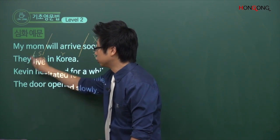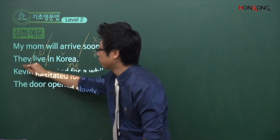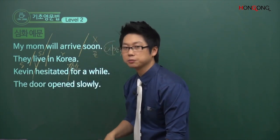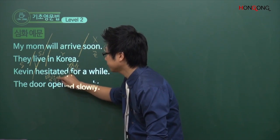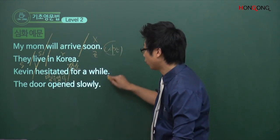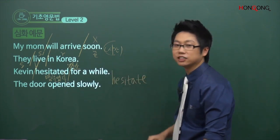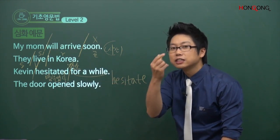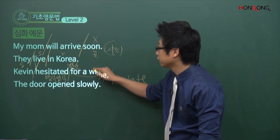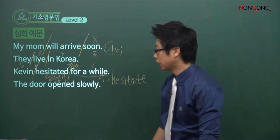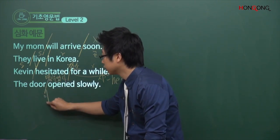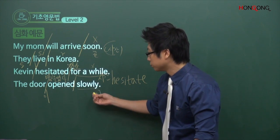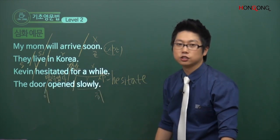Kevin hesitated for a while. '망설였다'는 뜻이고, for a while은 짧은 시간을 의미합니다, '잠시 동안'. 시간이니까 역시 카운트하지 않죠. Kevin은 망설였다, 일형식. 그 다음 The door opened slowly. 문이 열렸다, 천천히. '천천히'는 부사잖아요. 부사는 넣었다 뺐다 하는 거죠? 역시 부사도 문장 형식을 치지 않습니다. 그래서 문이 열렸다, 요것도 일형식이 되는 겁니다.